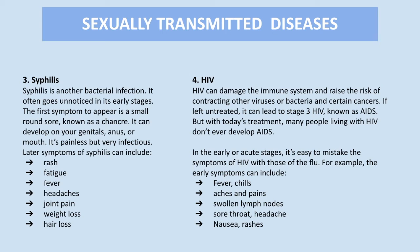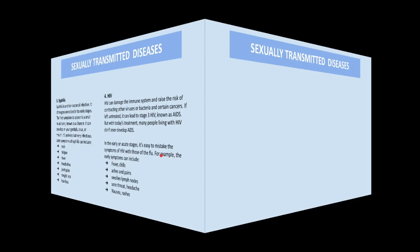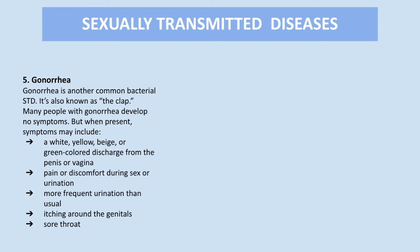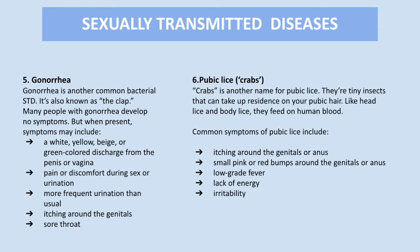Gonorrhea is another common bacterial STD, also known as the clap. Many people with gonorrhea develop no symptoms, but when present, symptoms may include various signs. Crabs is another name for pubic lice — tiny insects that can take up residence in your pubic hair and feed on human blood. Common symptoms of pubic lice include itching around the genitals or anus, small pink or red bumps around the genitals or anus, low-grade fever, lack of energy, and irritability.